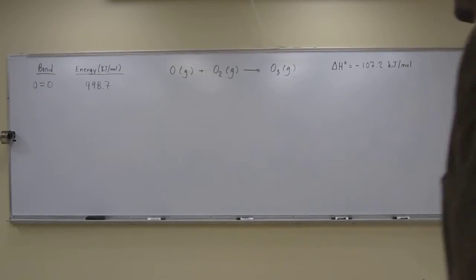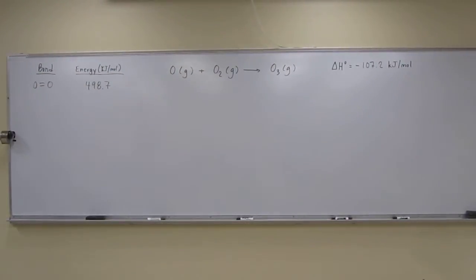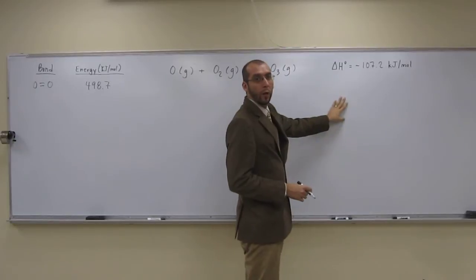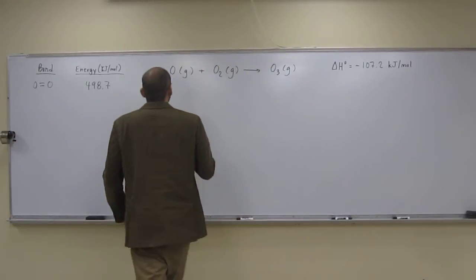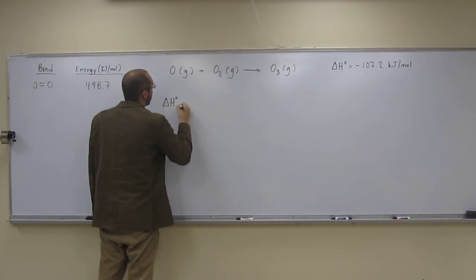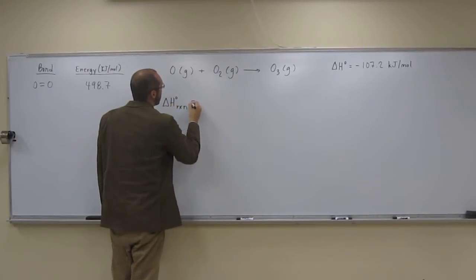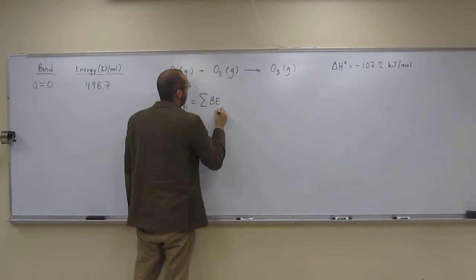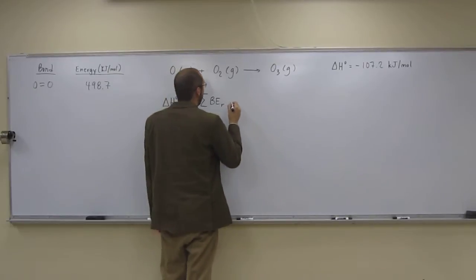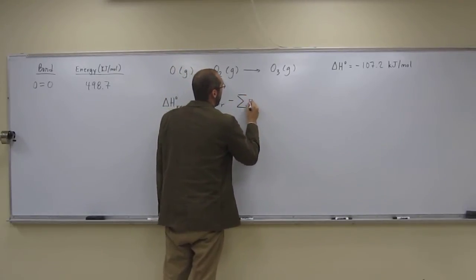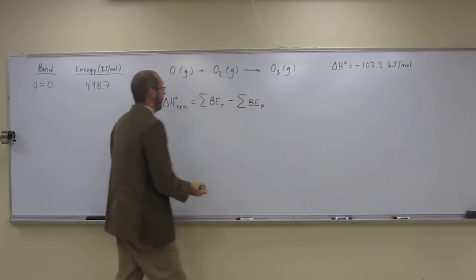So in order to do this, you have to remember how to get your overall enthalpy from your bond energies. If you recall, the delta H of the reaction is going to equal the sum of the bond energies of the reactants minus the sum of the bond energies of the products.